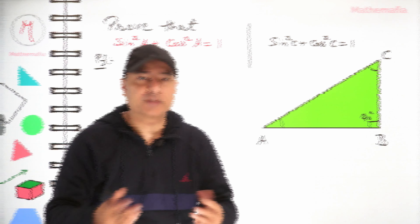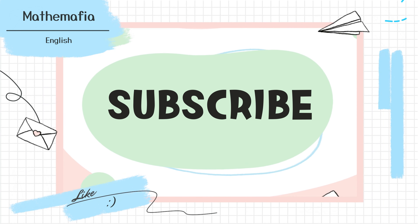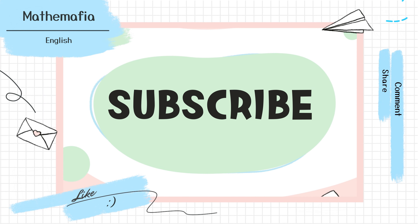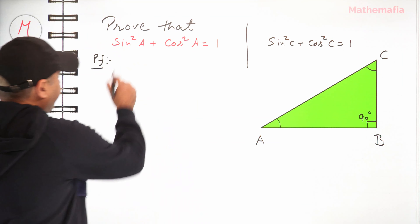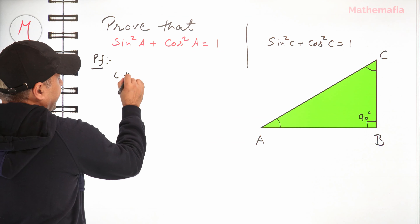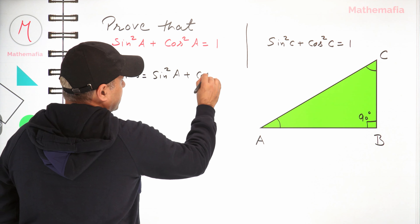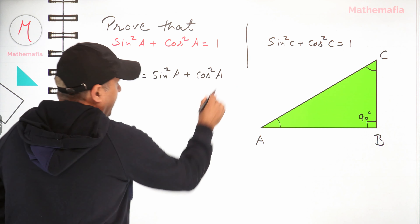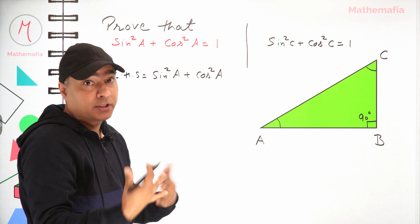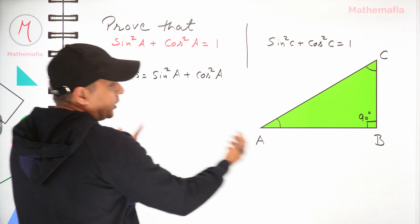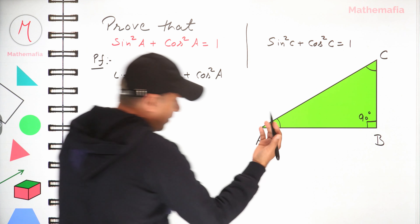It's very easy to prove, so let's prove it. Let's take the left-hand side: sin²a + cos²a. Now sin a and cos a are trigonometric ratios — they are ratios of two sides of this triangle.